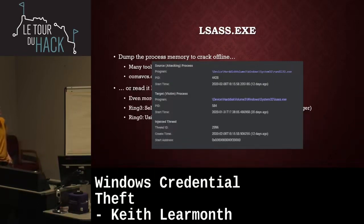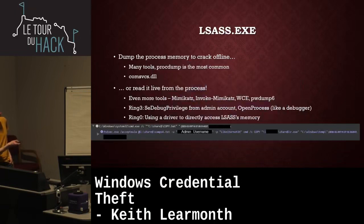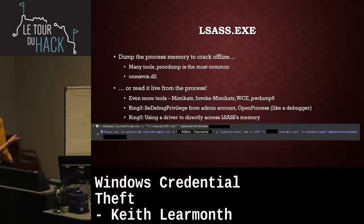One real-world timeline: at 02:08 on one day, then 02:09 the next — 25 hours later — we see comps6.txt, a list of all their computers with admin usernames and passwords pulled out, and r.exe, which is Ryuk. Goodbye, domain.